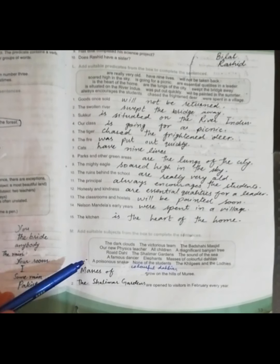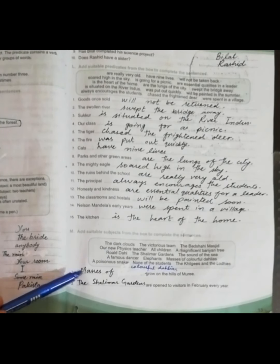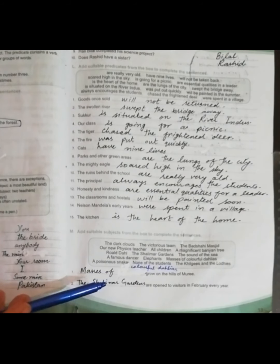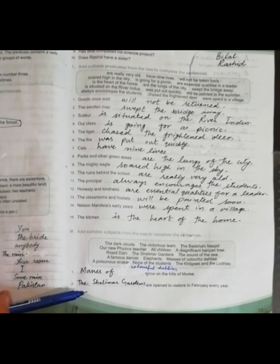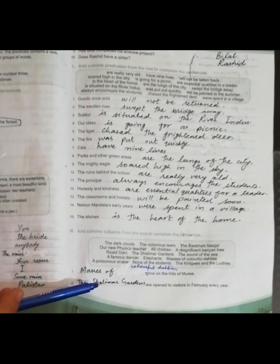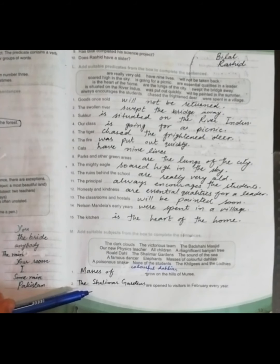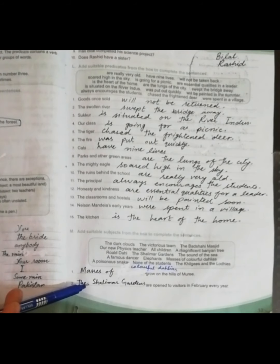So the first statement is: blank 'grow on the hills of Murree.' This subject, suitable subject is 'masses of colorful dales grow on the hills of Murree.' The next one is: blank 'are opened to visitors in February every year.' So the suitable subject would be 'the Shalimar gardens.'